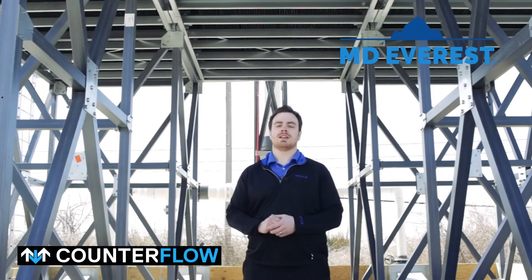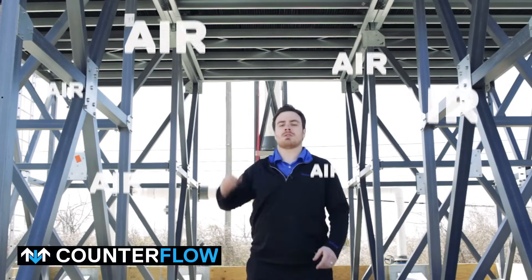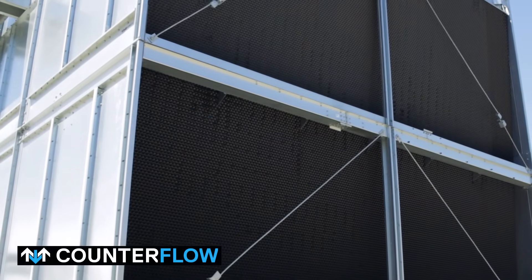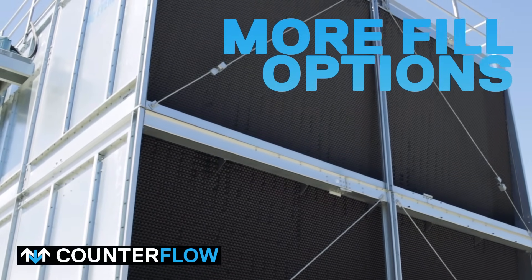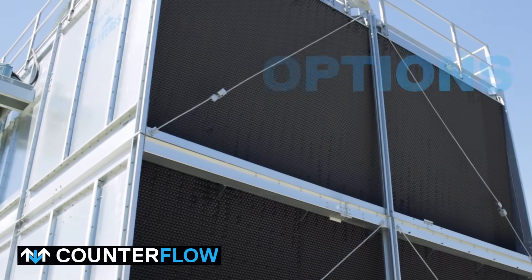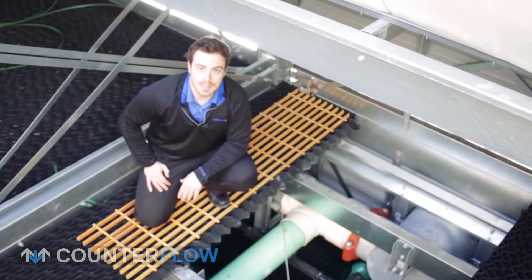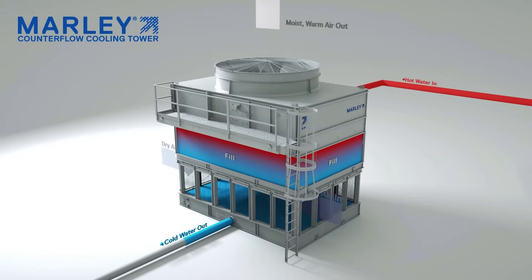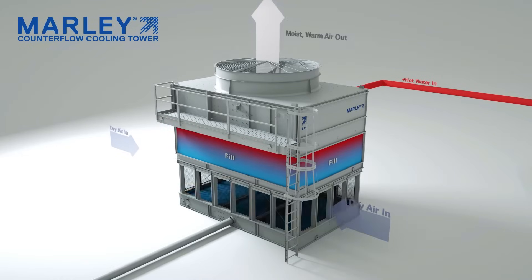Now we're standing underneath our MD Everest, which is a counter flow cooling tower. In the counter flow tower, the air travels underneath, turns upward, and goes through the tower traveling counter to the process fluid falling through the fill. Counter flow cooling towers have several more fill options relative to a cross flow cooling tower. This is important for certain applications where we need a more forgiving fill for dirty water applications. In a counter flow cooling tower, the air is being induced into the tower from underneath and pulled up through the fill, past the water distribution system, past the drift eliminators, and out through the fan discharge.